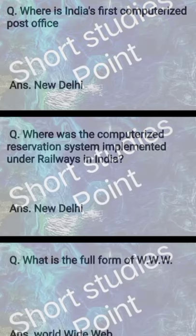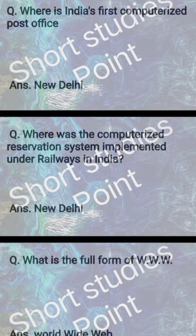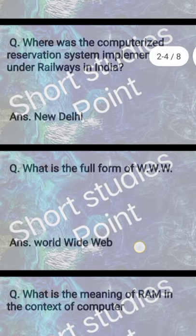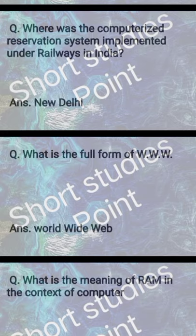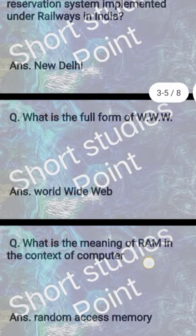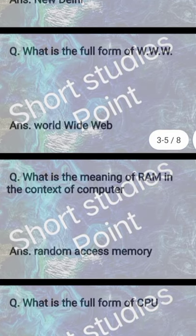Where is India's first computerized post office? Answer: New Delhi. Next question: Where was the computerized reservation system implemented under railways in India? Answer: New Delhi. Next question: What is the full form of WWW? Answer: World Wide Web.